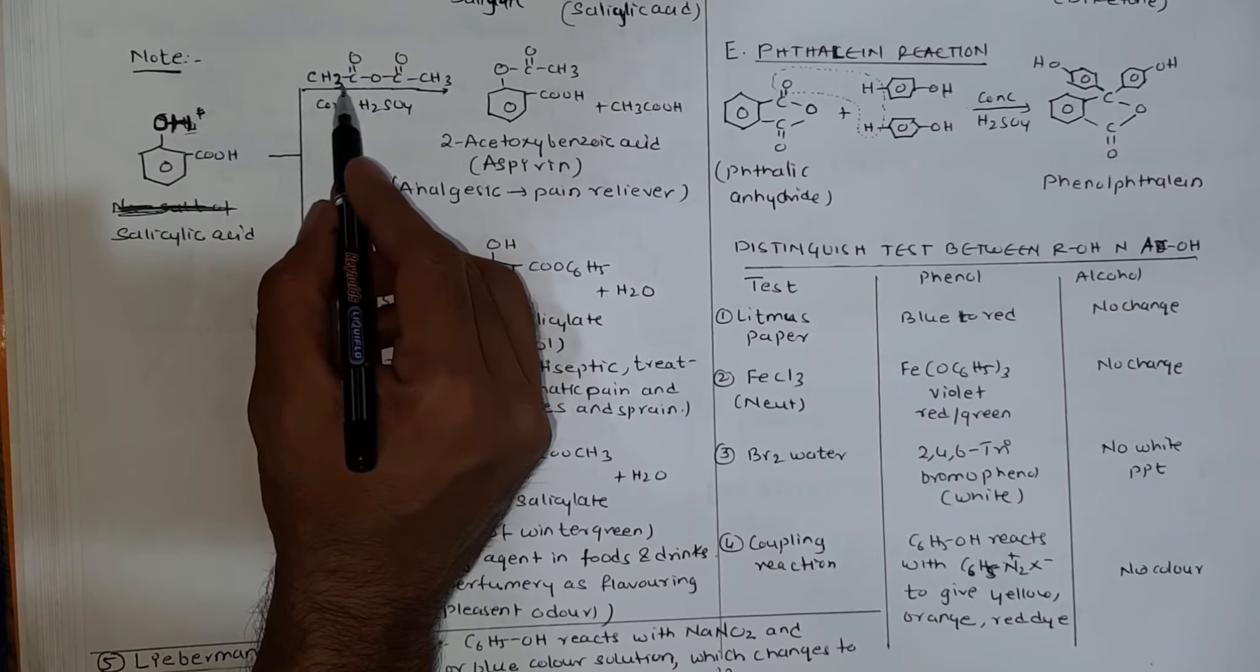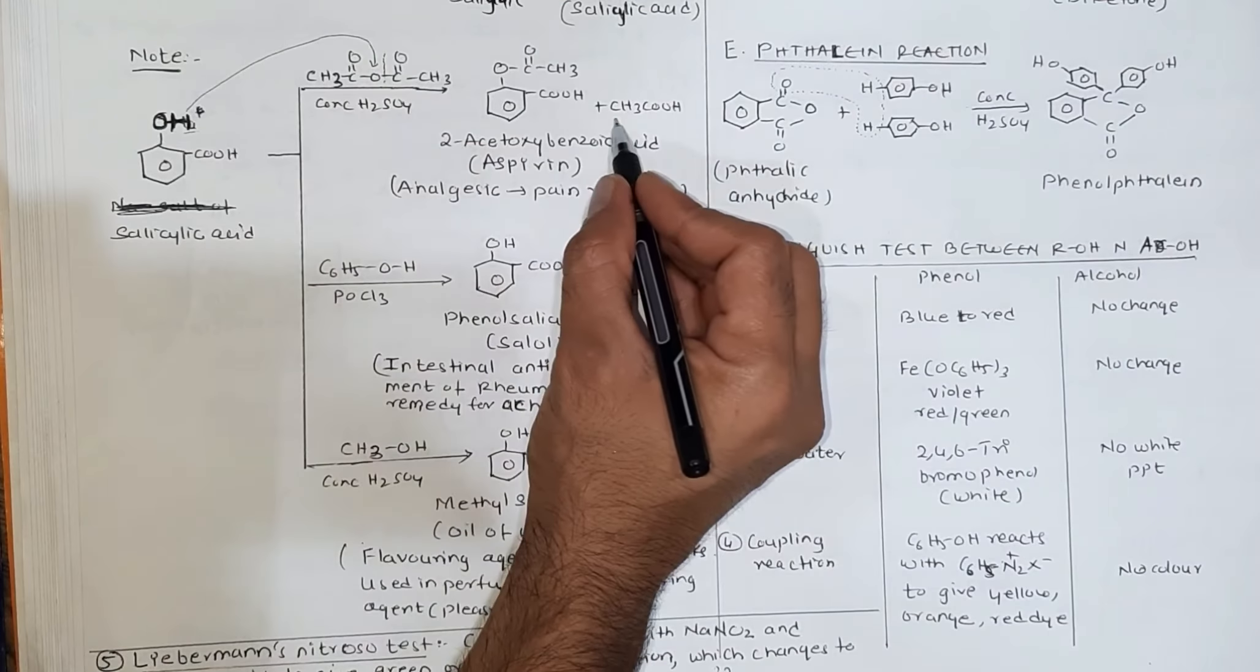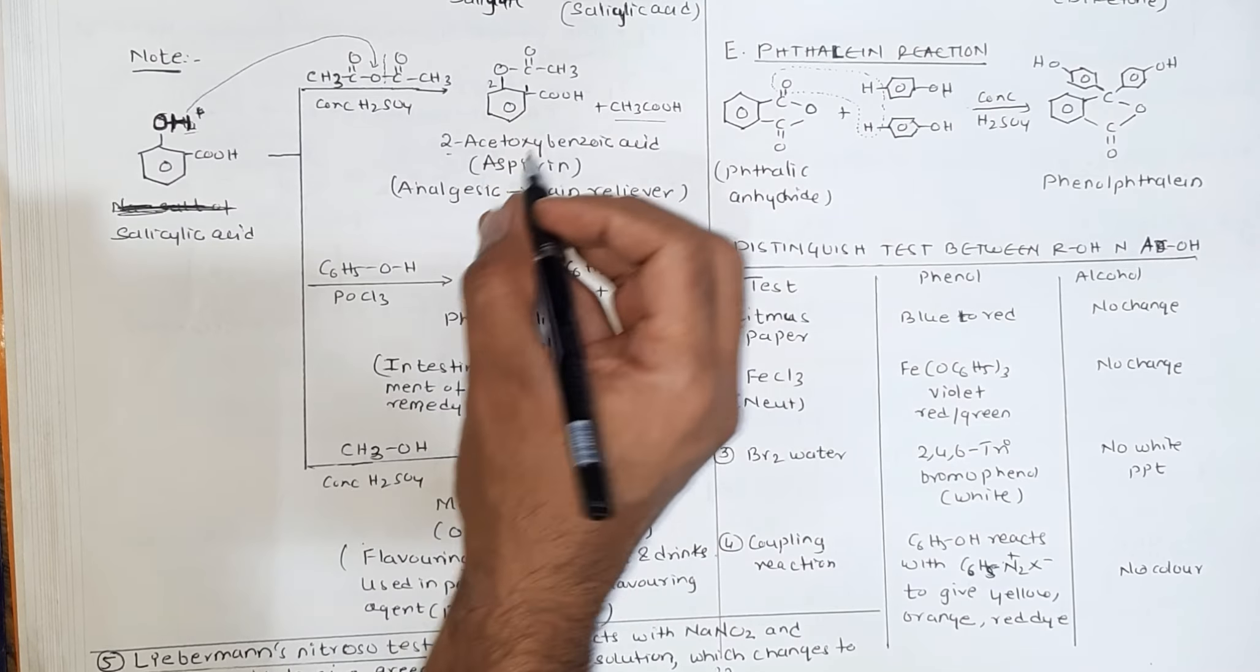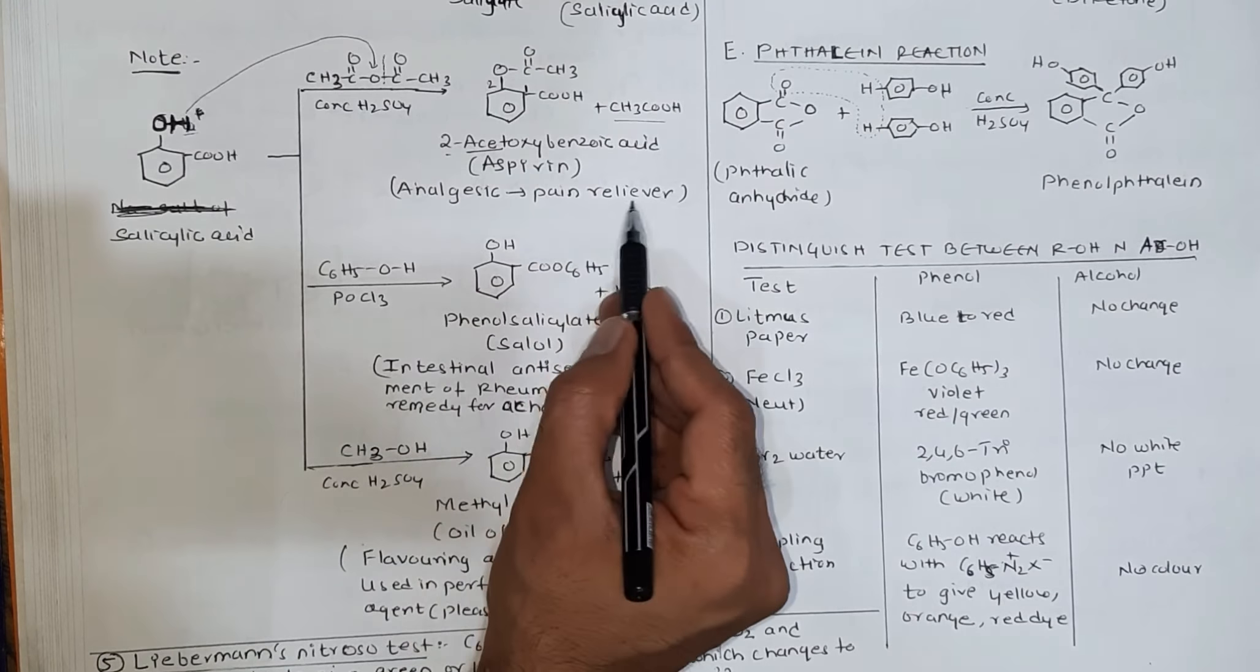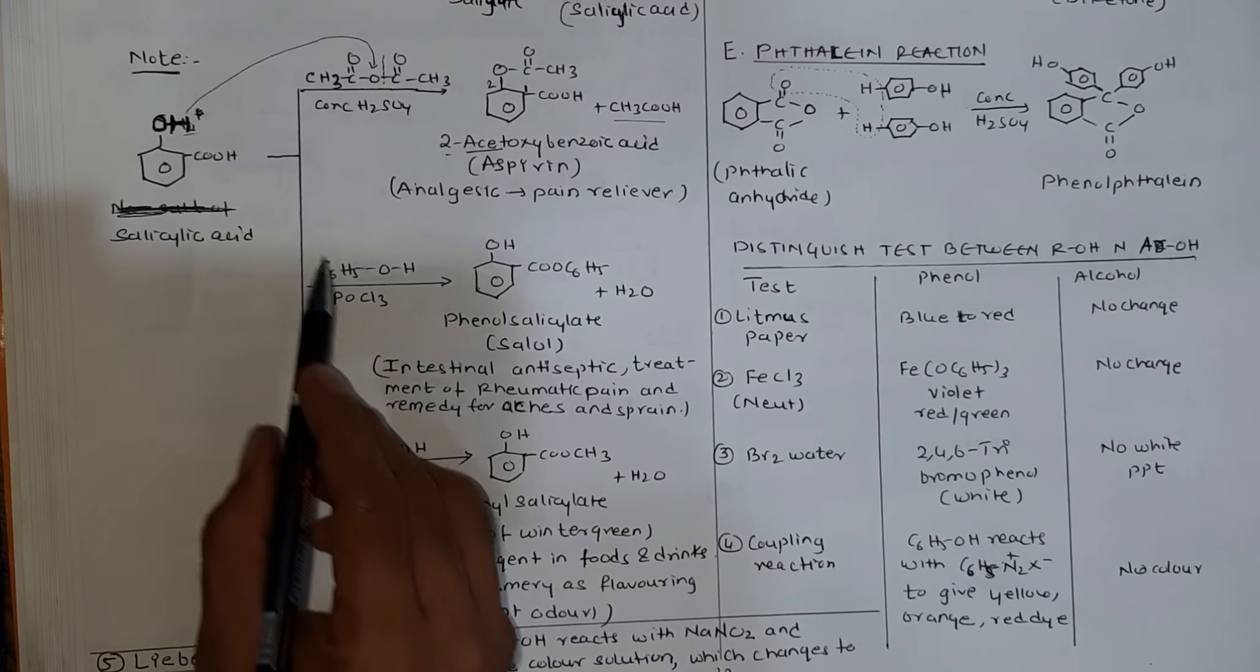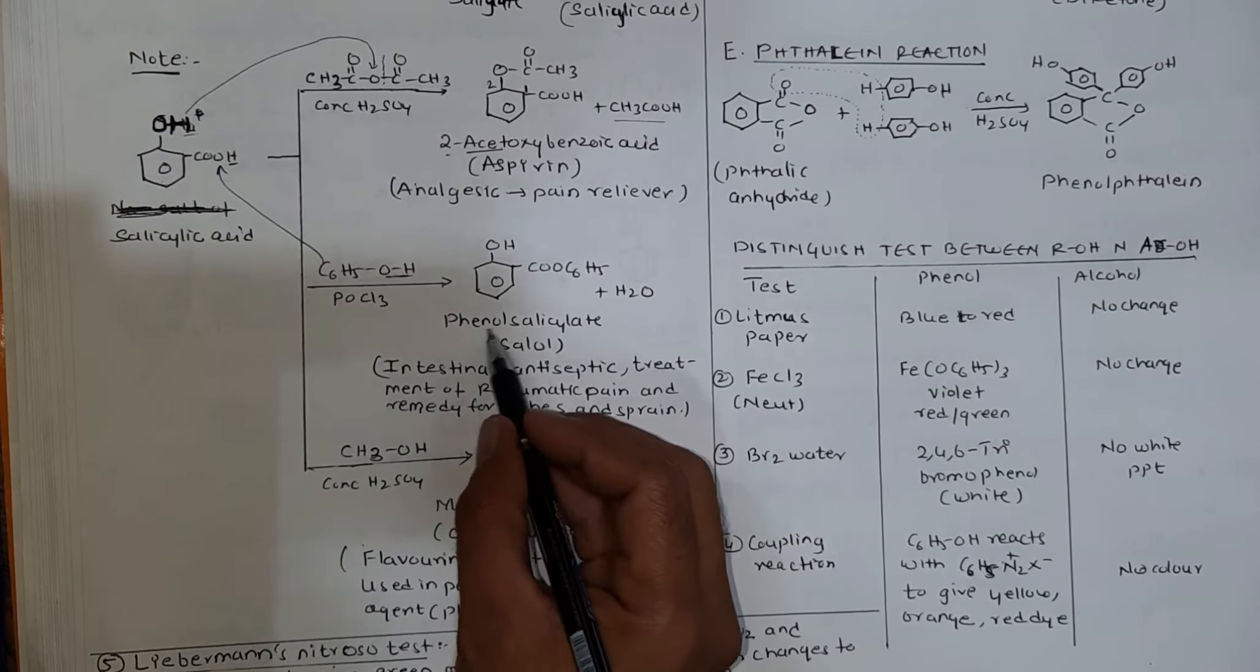Salicylic acid with acetic anhydride - the bond breaks and H is replaced by CH3COOH. COCH3 replaces H through acetylation. This forms 2-acetoxybenzoic acid, also called aspirin, a pain reliever used in medicines like Combiflam and Crocin. If you react salicylic acid with POCl3 and phenol, H and OH are replaced by C6H5, forming phenyl salicylate, also called salol, an intestinal antiseptic.